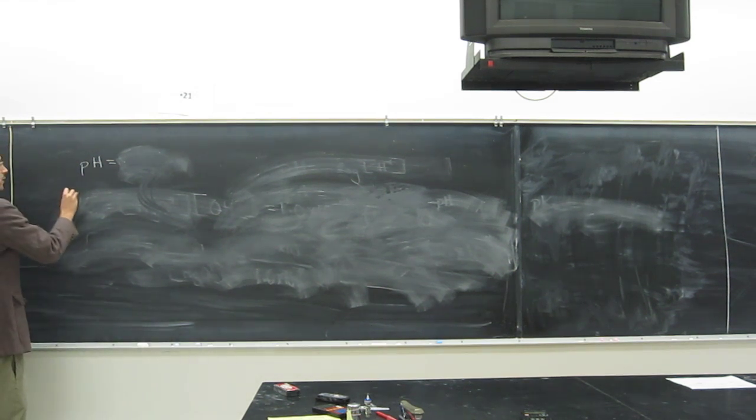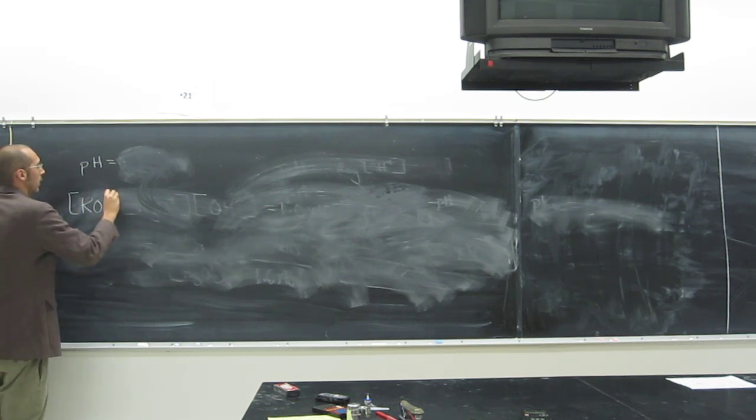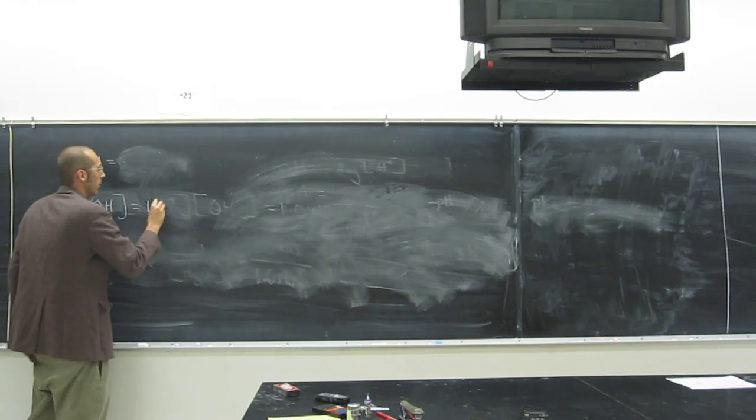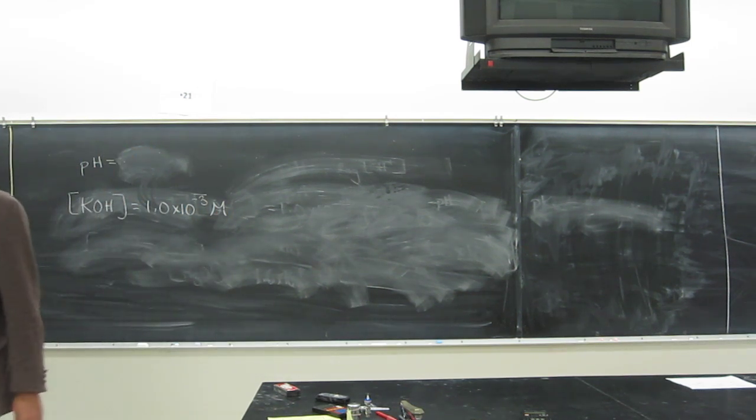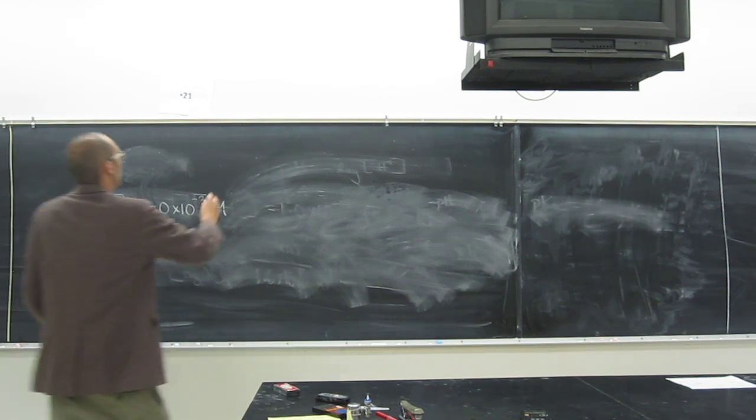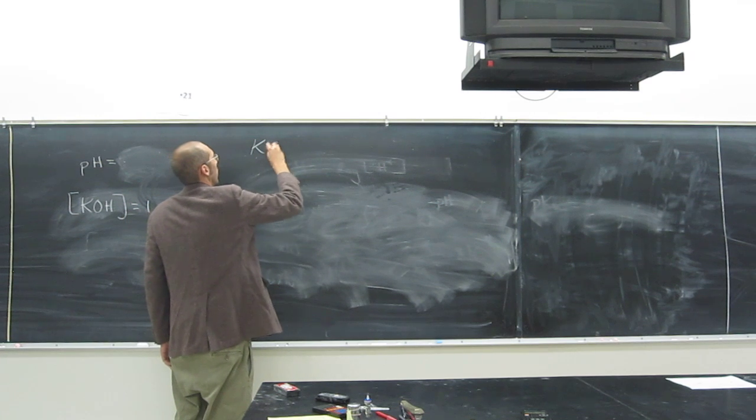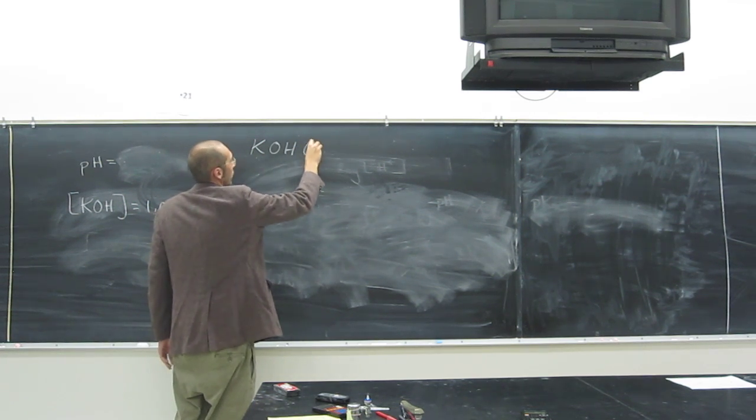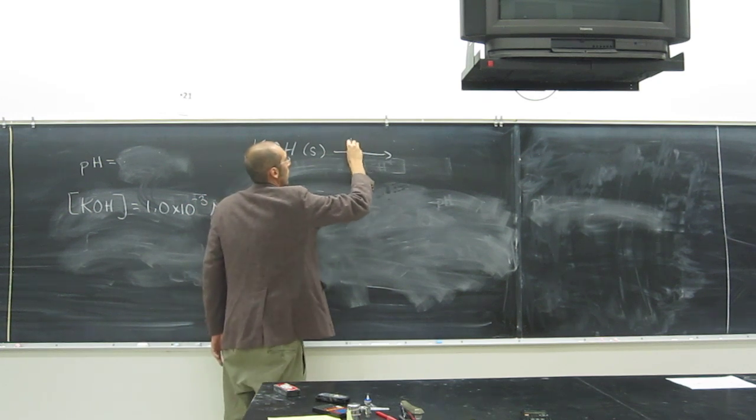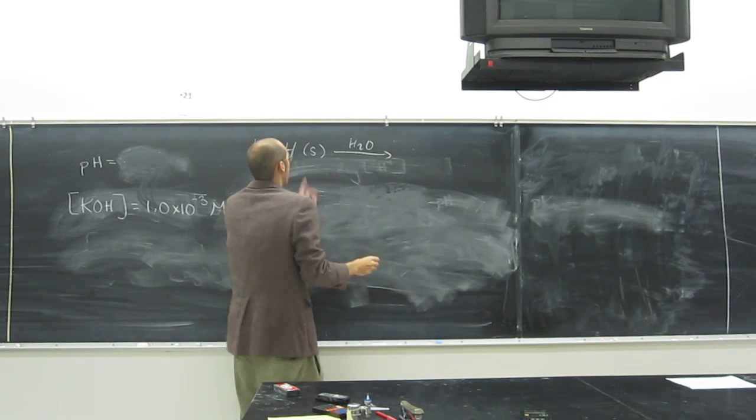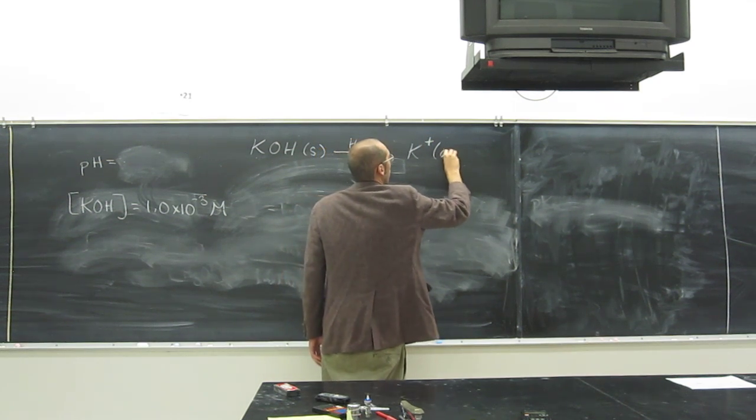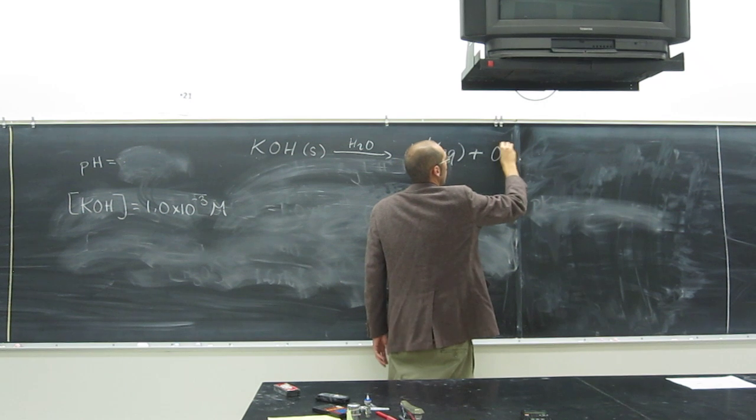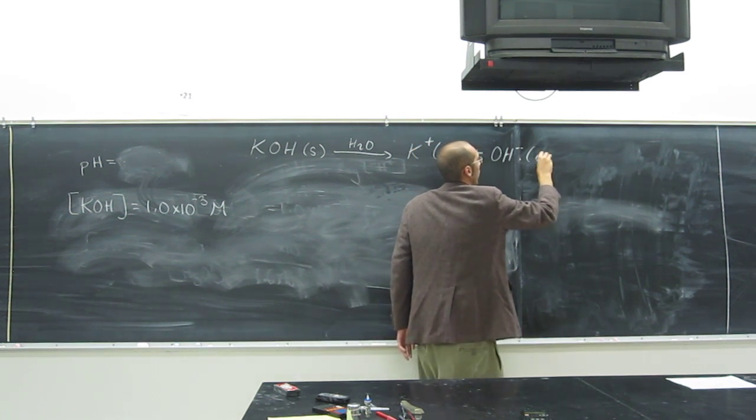So we know the concentration of KOH, 1.0 times 10 to the negative 3 molar. We also know what KOH does when we put it into water. We can think of KOH, we can think of it as solid, putting it into water if we want. Or we can start in aqueous. It breaks up into the K plus AQ and the hydroxide minus AQ.